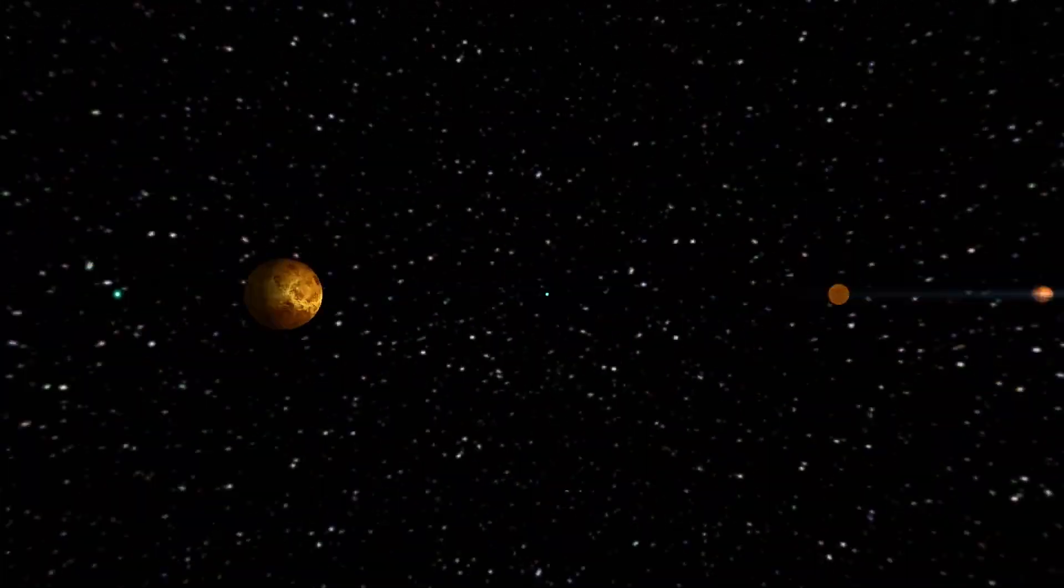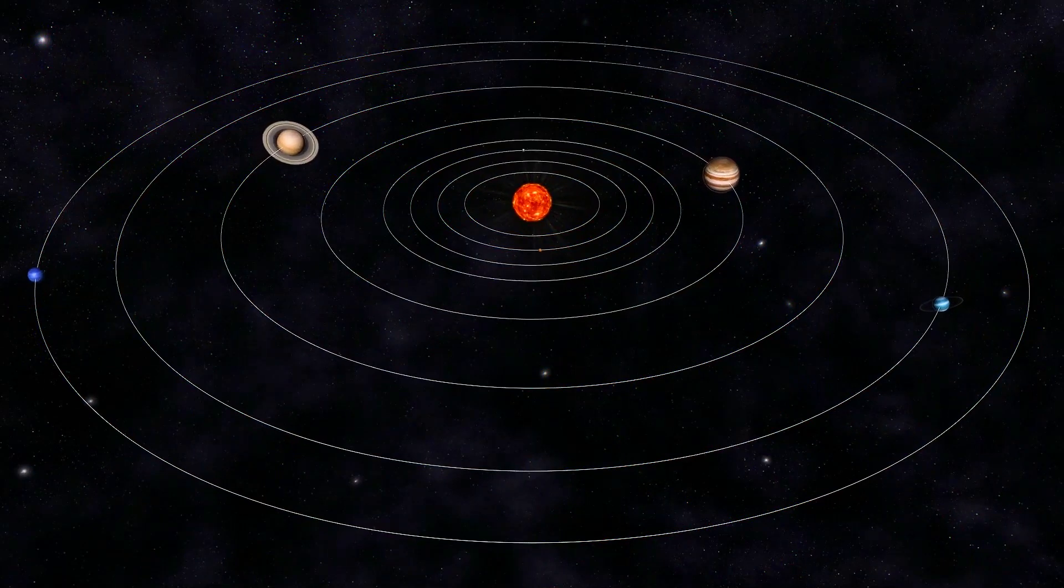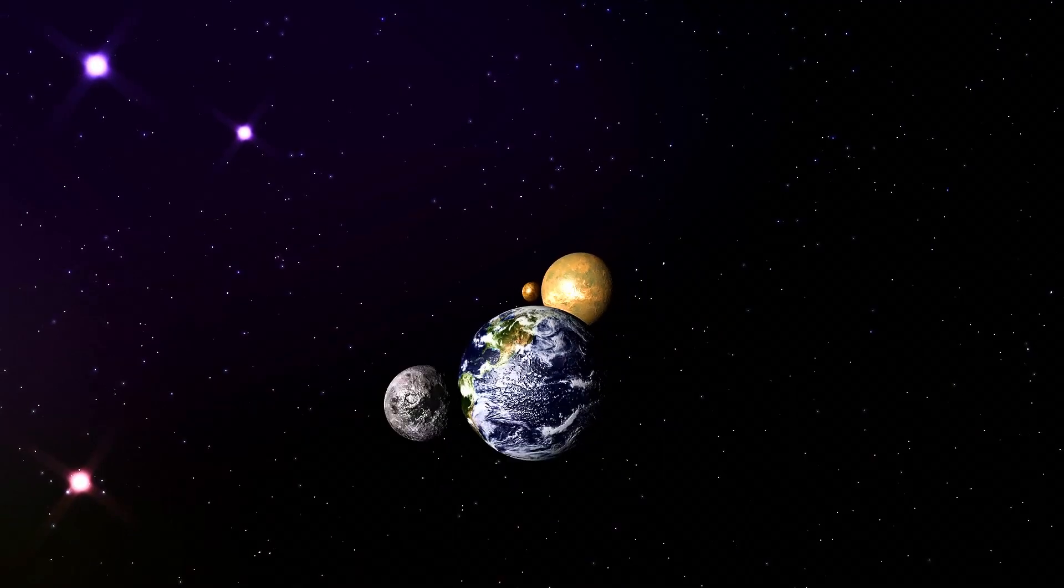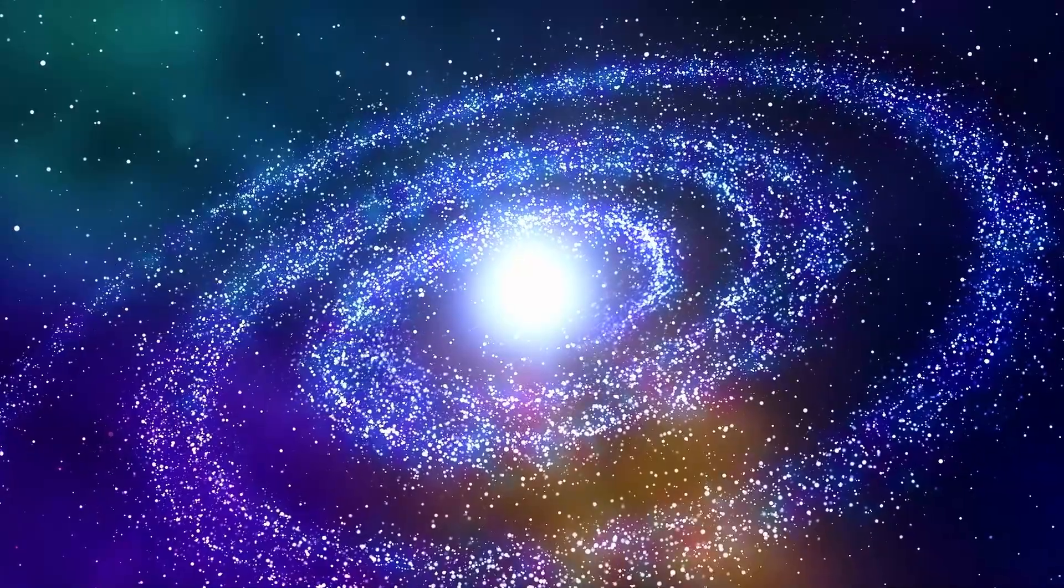Only two man-made objects have crossed the heliopause, Voyager 1 and Voyager 2. Both probes were launched in 1977 to study our solar system and beyond. Voyager 1 crossed the heliopause on August 25, 2012, and Voyager 2 crossed the heliopause on November 5, 2018.